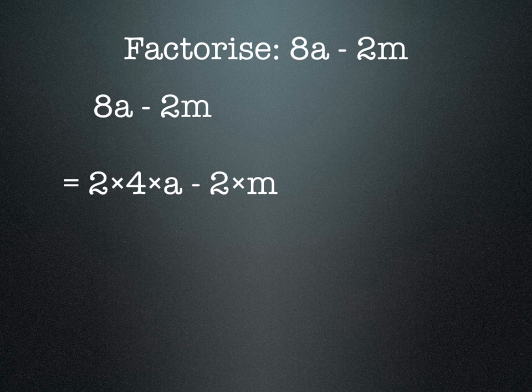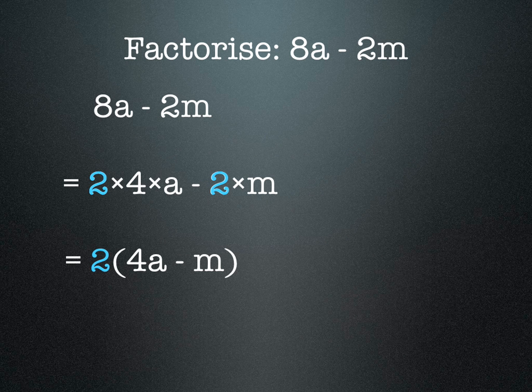We need to look for a common factor in both terms, things that are the same. We can see that 2 is the same, so we put 2 at the front of the brackets. Inside the brackets is what's left behind in both terms. So we have 2 at the front and 4a - m inside the brackets. We've factorized that expression by taking out the common factor.